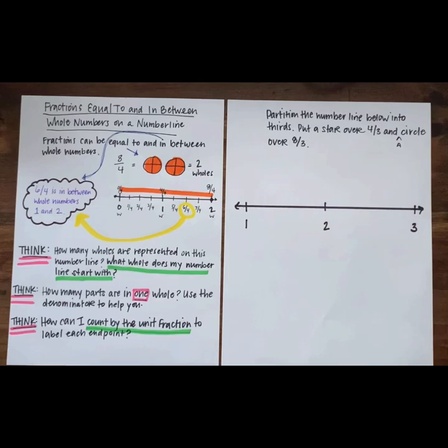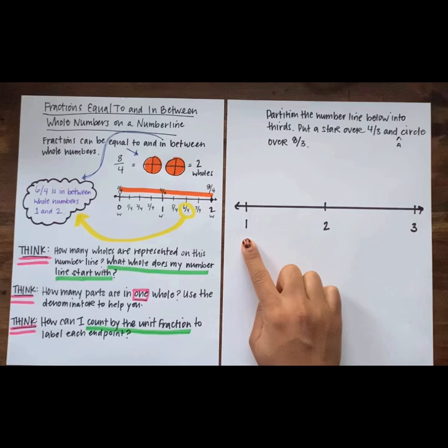Let's take a look at this one more. Look carefully at this number line. How is it different than some of the other number lines we've been locating fractions on? That's right — this number line doesn't start at zero. What does it start at? Say it fast. Yes, it starts at one.